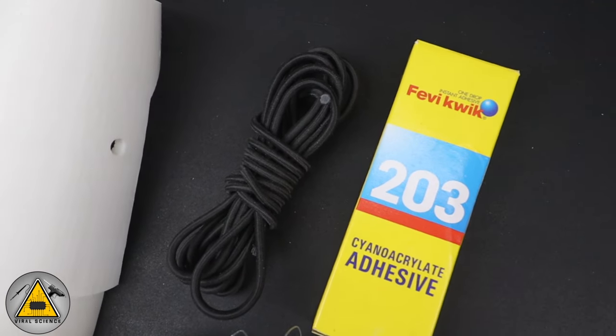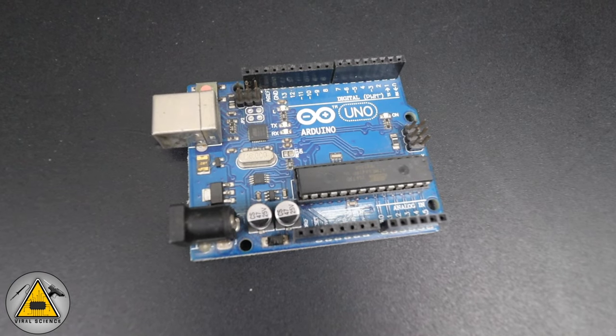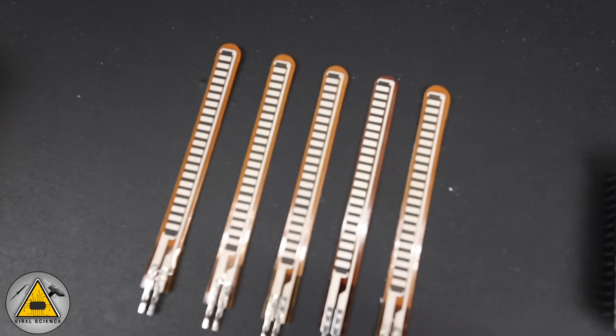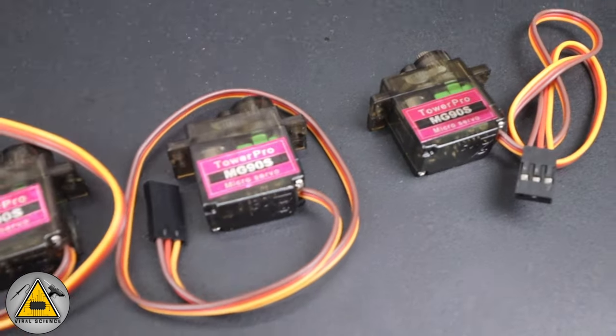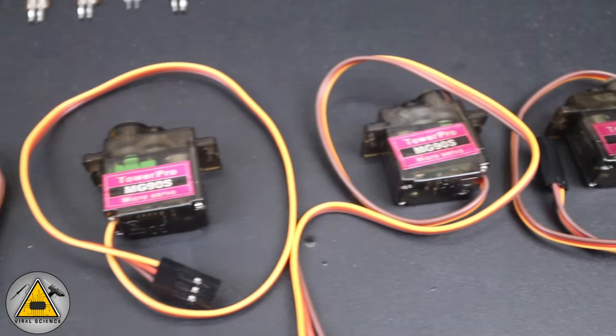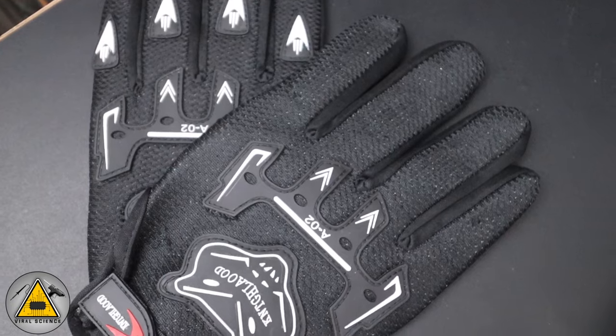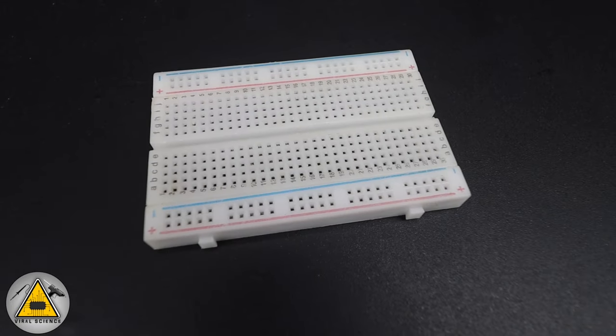From the electronic section you will need an Arduino board. I am using Arduino Uno. These are the flex sensors. I am using 5 flex sensors for each of the fingers and these are the 5 servo motors. This is a pair of gloves, you will need one glove. This is a breadboard and you will need some jumper wires.